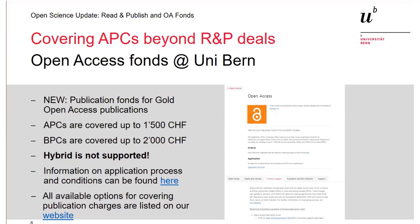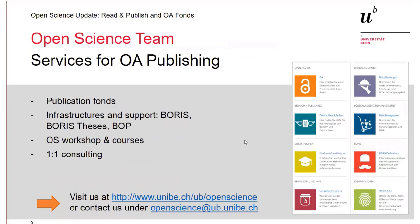These links are live — you can find the application process and conditions described on our website under open access, financial support. The application form is also linked there. We are going to try to answer your requests as quickly as we can. If you have any questions pertaining to the topics here or anything pertaining to open science, we're happy to help. You can find us at the email address here or check out our website, which is quite extensive and covers many open science issues.